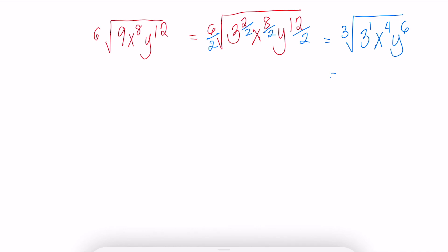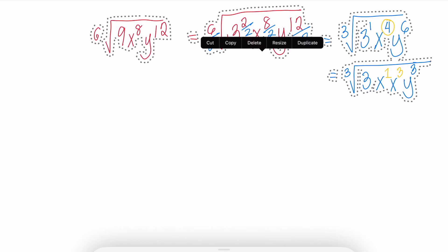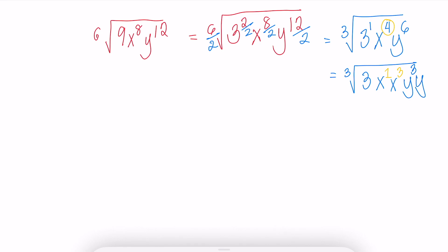Now we can take out values that can leave the radical house. So we have 3x. x to the 4 can be written as x times x to the 3, while y to the 6 can be written as y to the 3, and another y to the 3. A total of 6.